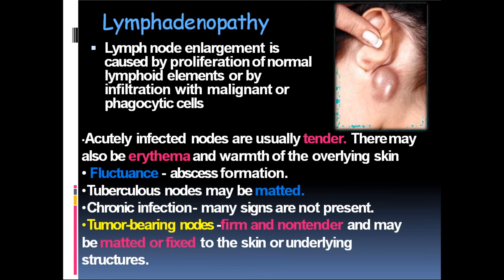Lymph node enlargement is caused by proliferation of normal lymphoid elements or by infiltration with malignant or phagocytic cells. Acutely infected nodes are usually tender and may have erythema and warmth over the skin. Fluctuance is present in case of abscess formation. Tuberculosis nodes may be matted — fused to each other. Chronic infections lack many of these signs. Tumour-bearing nodes are firm and non-tender — painless enlargement is usually dangerous — and may be matted or fixed to the skin or underlying structures.